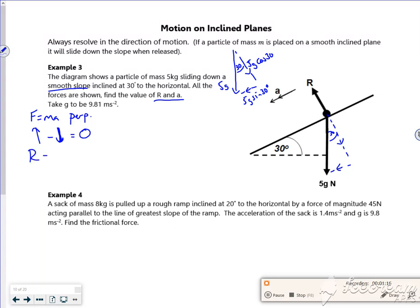So the force going up is R, the force perpendicular going down is 5g cos 30, so R is equal to 5g cos 30. And it tells you g is 9.81, so I've got to leave an answer to 3 sig fig, so that gives me R out as 42.5 newtons to 3 sig fig.